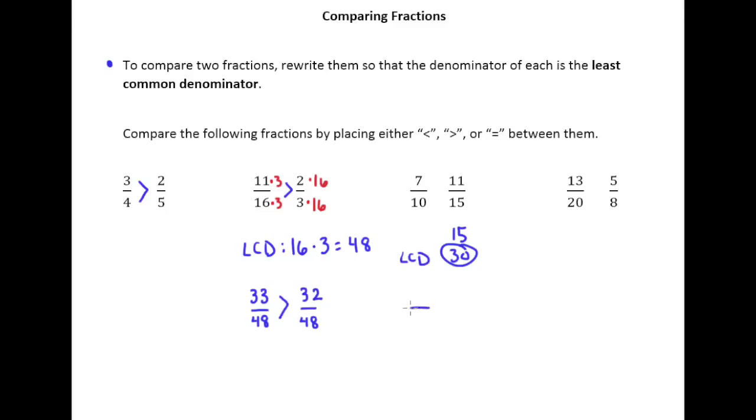And so I need to rewrite 7 tenths so it has a 30 on bottom. I need to rewrite 11 fifteenths so it has a 30 on bottom. And so we say what do I have to do to 10 to make it into 30? Well of course multiply it by 3. So if you multiply the bottom by 3 you better multiply the top by 3. So I get 21 thirtieths for the fraction on the left. Do the same thing with 11 fifteenths. 15 times 2 would make 30 so I better multiply the 11 by 2. So 11 times 2 is 22 and so here we can see that the first fraction is less than the second fraction when they both have a denominator of 30, so that means the same relationship holds up here.